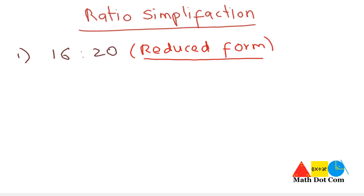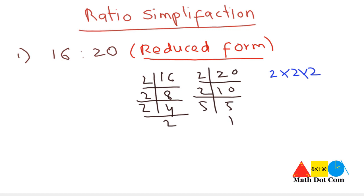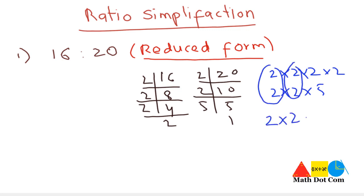We can get the reduced form by finding the HCF of 16 and 20. Let's find the HCF. For 16: 2 times 8 is 16, 2 times 4 is 8, 2 times 2 is 4 — so 16 equals 2 × 2 × 2 × 2. For 20: 2 times 10 is 20, 5 times 2 is 10 — so 20 equals 2 × 2 × 5. The common factors are 2 × 2 = 4, so the HCF of 16 and 20 is 4.